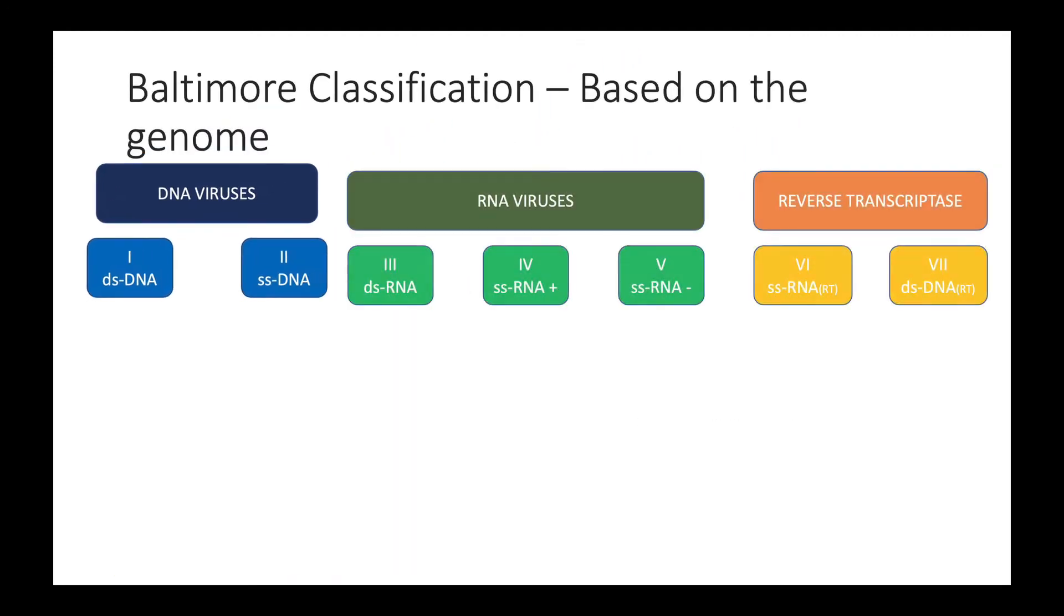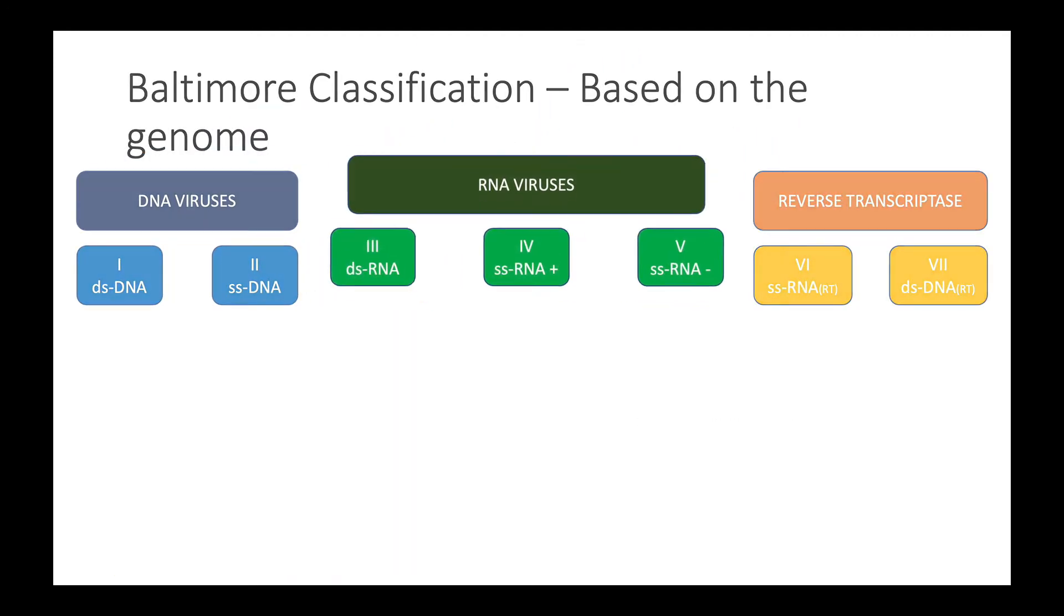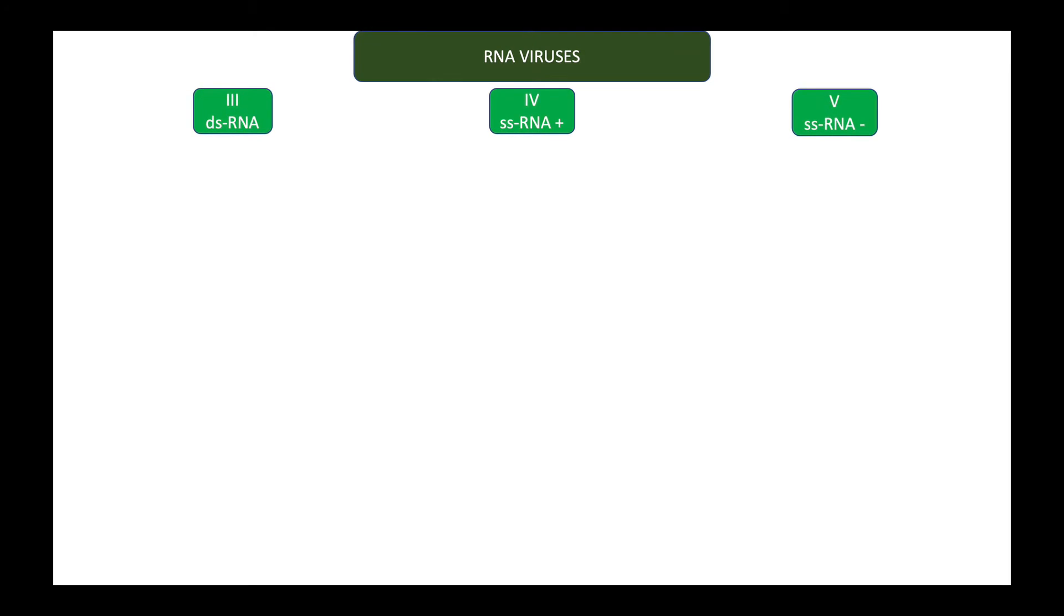Now we move on to class three to five which are the RNA viruses. Class three is double-stranded RNA viruses. The family that is pathogenic in humans is the Reoviridae family. Under this family, we have rotavirus that causes diarrheal diseases in children. We also have reovirus and Colorado tick fever virus.